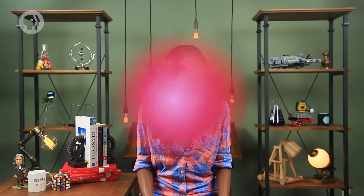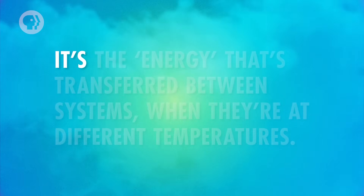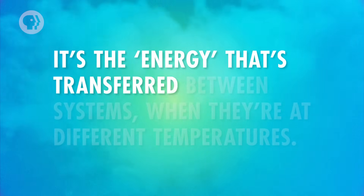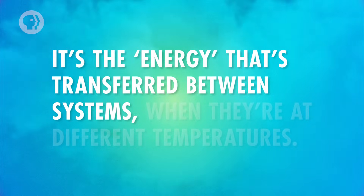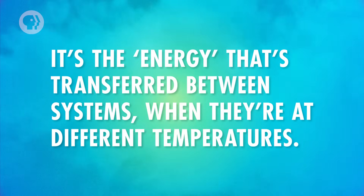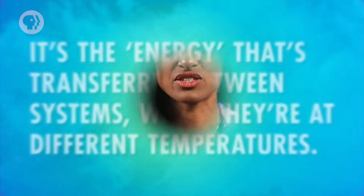It's hard to define what heat is exactly, just based on our own perceptions. For a long time, scientists described heat as a kind of fluid, since it flows from one system to another. But these days, we know that heat isn't actually a fluid. It's the energy that's transferred between systems when they're at different temperatures. In equations, we represent heat using the capital letter Q.